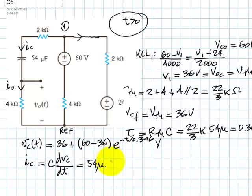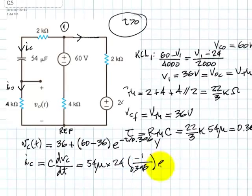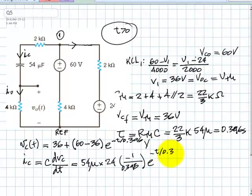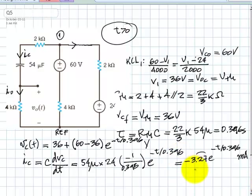This is 0, the derivative, and this would be 24 that multiplies the negative of 1 over 396 divided by 1000, and that times the exponential negative T divided by 0.396. That current turns out to be negative 3.27 periodic, e to the negative T over 0.396 milliamps.